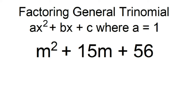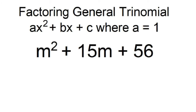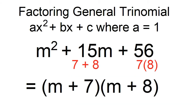In this example, a equals 1, b equals 15, c equals 56. To factor, just think of two numbers that will give you a product of c and a sum of b. The numbers are 7 and 8. The factors are m plus 7 and m plus 8.